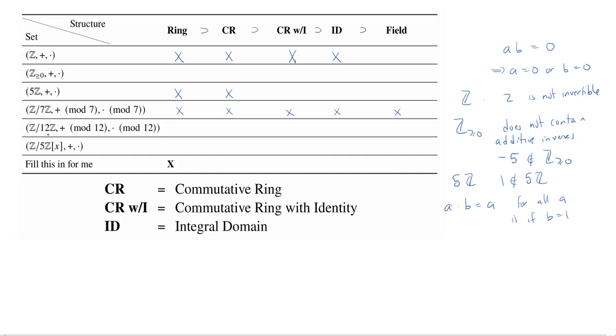But then we go to Z mod 12Z. And this is going to be a little different. It's still a ring, still a commutative ring. You still have this identity class, class of one. But it's no longer an integral domain because, if we're looking at Z mod 12Z, I can take, for example, the class of three and the class of four. I will get the class of 12, which is equal to the class of zero.